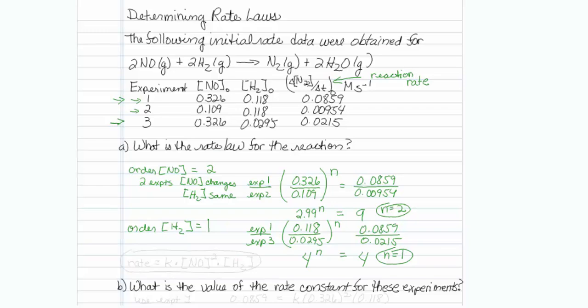So our reaction order with respect to H2 is 1. So now I can write my rate expression, my rate is equal to some rate constant times NO to the second power times H2 to the first power. That is my rate law based on experimental data.